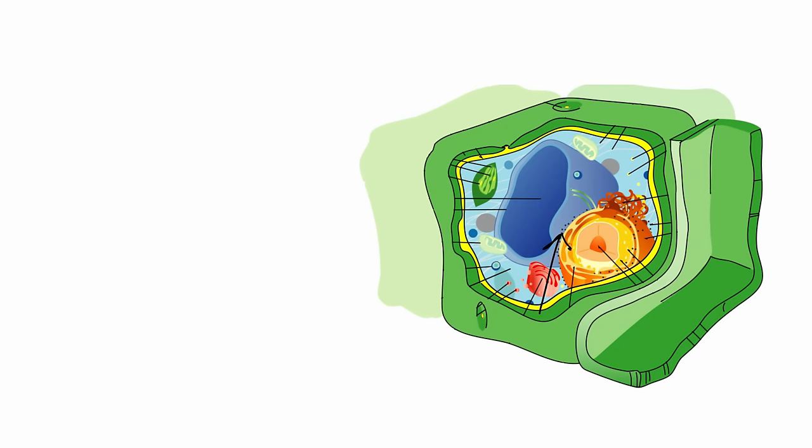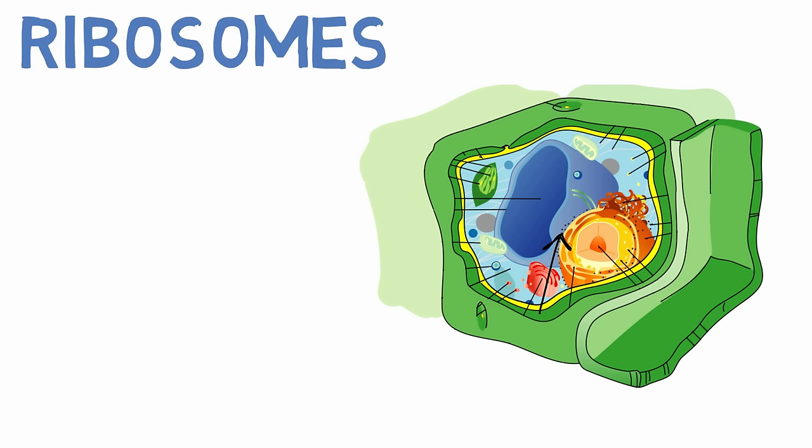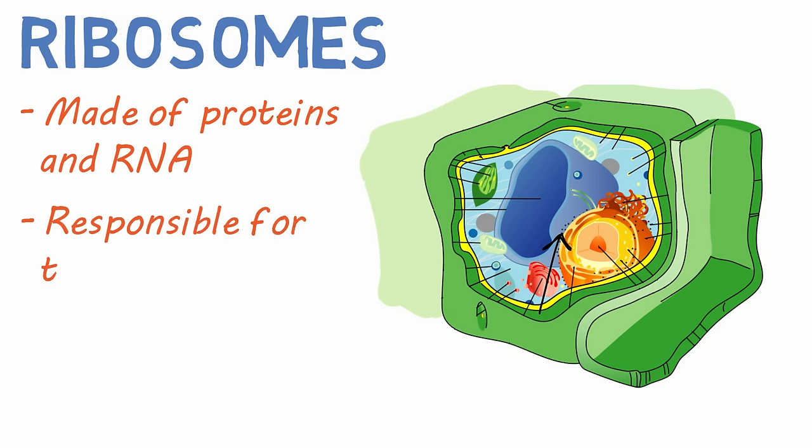Ribosomes are next, and they are small structures throughout the cell made up of proteins and RNA. They are responsible for translating RNA into proteins for use in and out of the cell. They are found freely floating in the cell or bound to the endoplasmic reticulum.